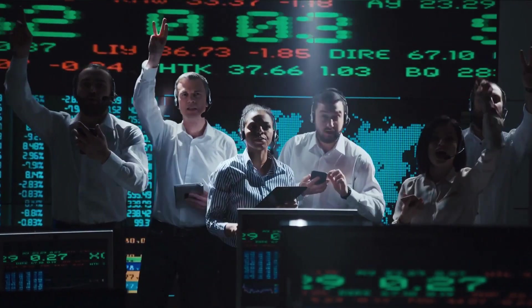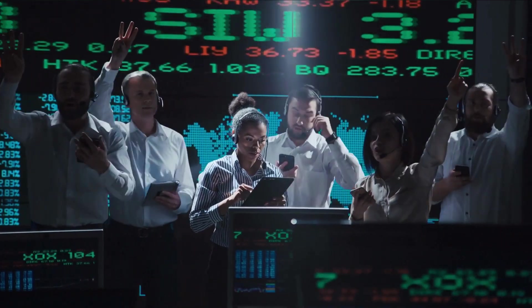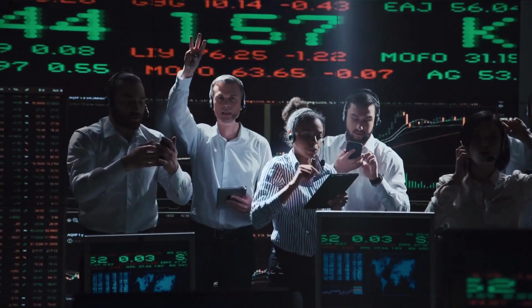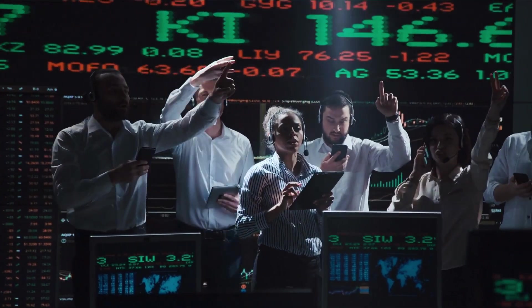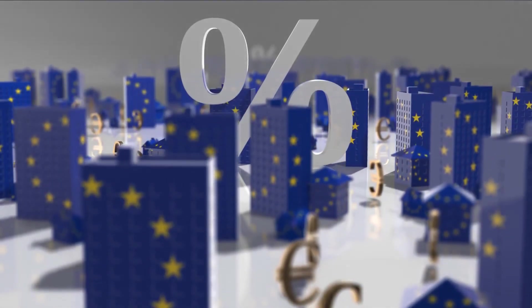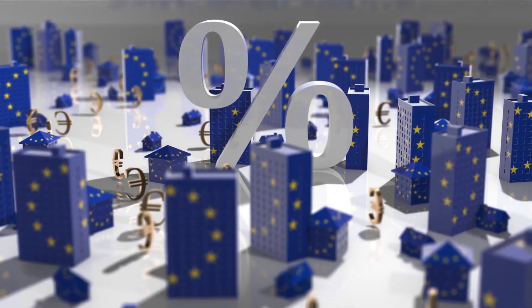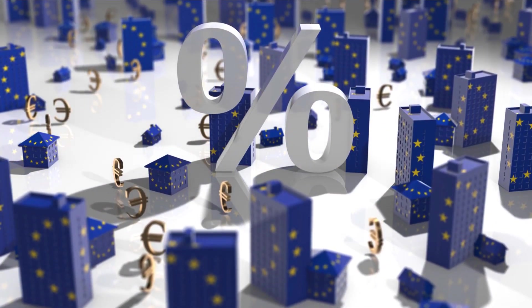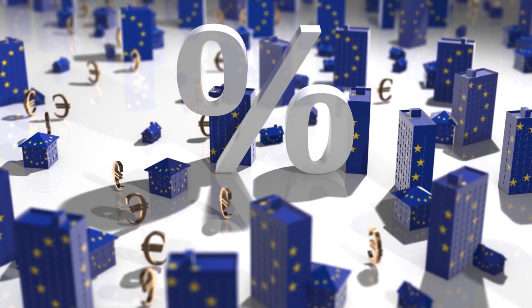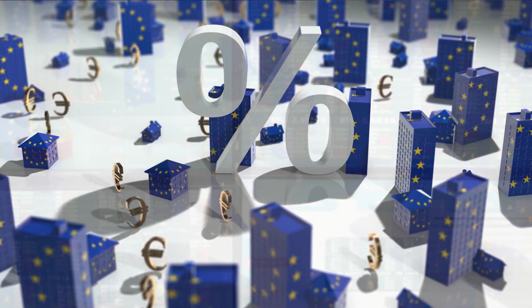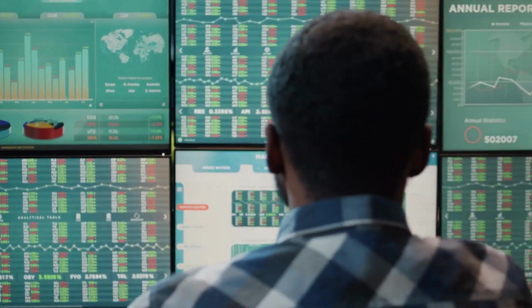An asset bubble arises when the price of an asset — such as stocks, bonds, real estate, or commodities — rises rapidly without underlying fundamentals to justify the price increase, such as increased demand. Prices are expected to grow and fall over time as buyers and sellers find and progress toward equilibrium. As the process progresses, prices are expected to overshoot and undershoot the prices predicted by supply and demand fundamentals, as economists have proved in controlled experiments and classroom exercises.